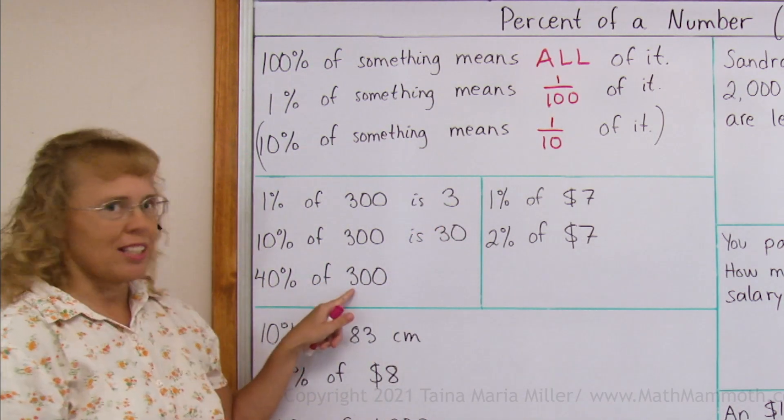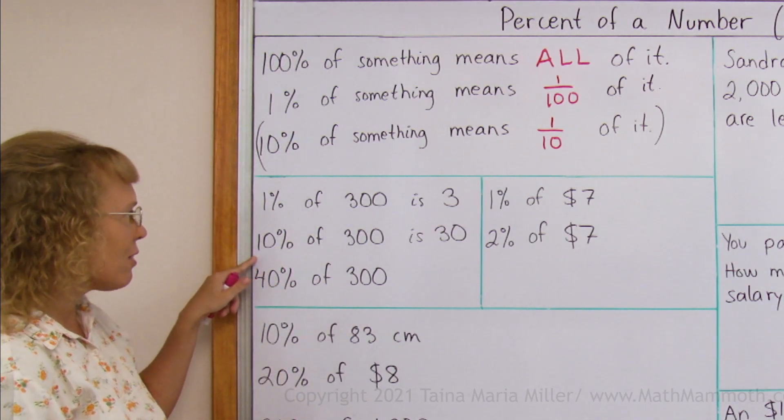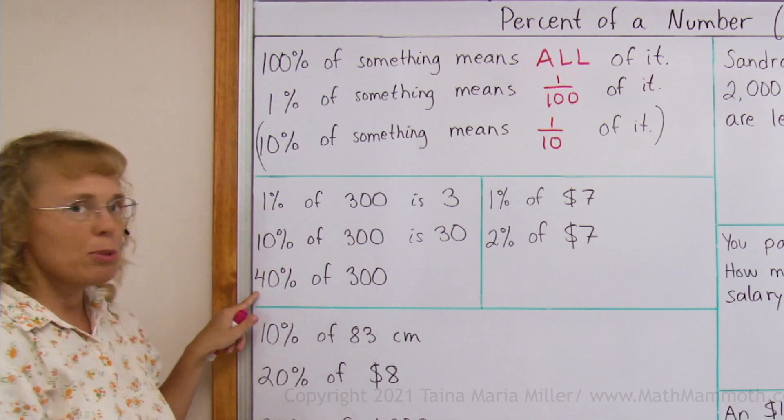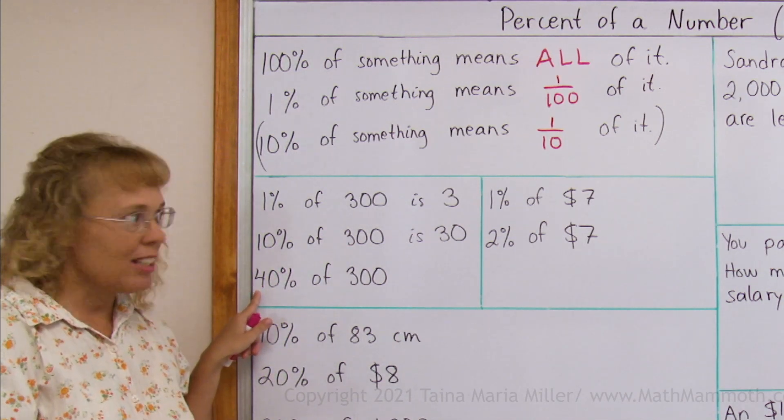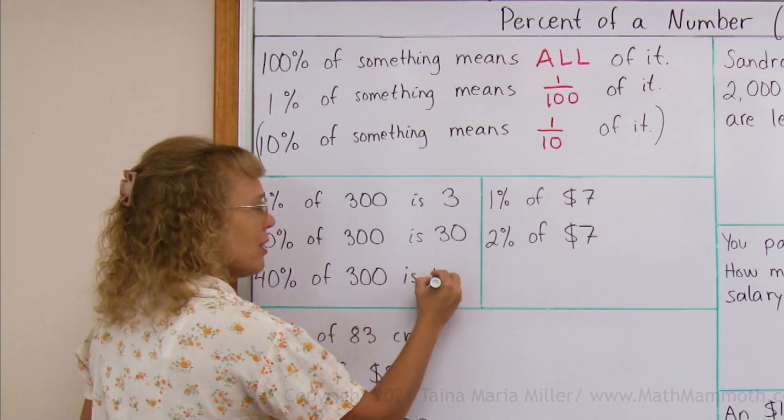Now forty percent of three hundred. Use your previous result. If ten percent of it is thirty, forty percent is four times as much. So take four times that result: 120.